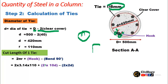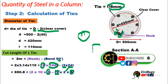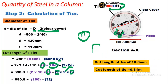Putting in the values: 2 hooks at 10d each gives 2 × 10 × 8 mm for hooks, minus the bend deduction of 2 × 2d for two 90-degree bends (2 × 2 × 8 mm). Combining these with the circumference of the tie, the cut length of a single tie works out to 0.81 meters.